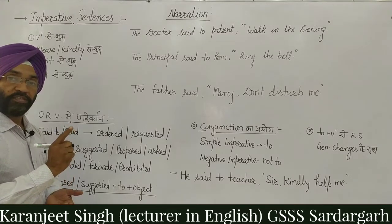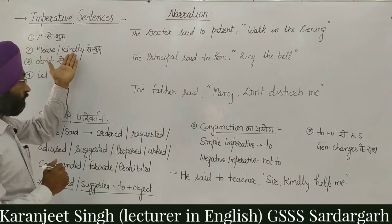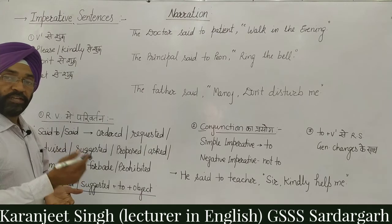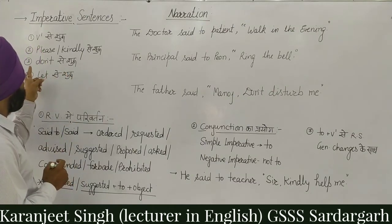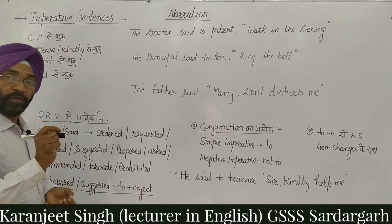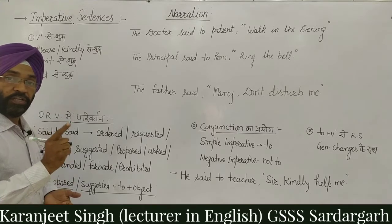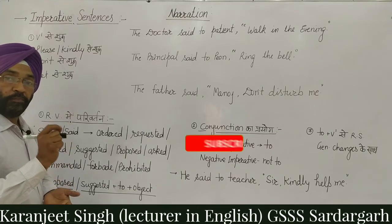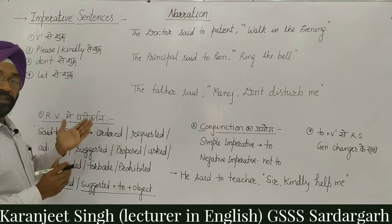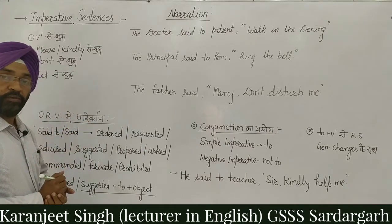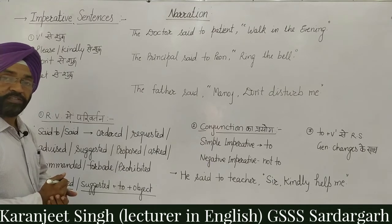Kyunki ham order, advice, suggestion second person ko dete hain. Second identification: is mein 'please' ya 'kindly' word se bhi shuru kiya ja sakta hai — jaise 'Please bring a glass of water.' Third identification: negative imperative sentence 'don't' se shuru hoti hai — for example 'Don't pluck flowers', 'Don't teach me.' Last identification: ye sentence 'let' se bhi shuru ho sakti hai — for example 'Let's play cricket', 'Let me go.'